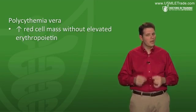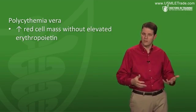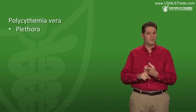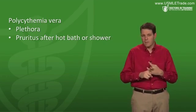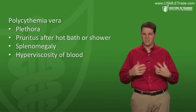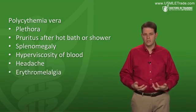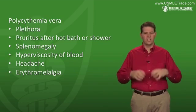Polycythemia vera involves a JAK2 mutation in a red cell precursor, causing out-of-control red cell production. It is characterized by an increased red cell mass without elevated erythropoietin, which is unusual. Polycythemia vera is associated with plethora — a reddening of the face — pruritus or itching after a hot bath, splenomegaly, and hyperviscosity of the blood. Patients can have headache due to blood sludging, and a rare symptom called erythromyalgia, where hands or feet become red, swollen, and painful due to sludging and clotting in the extremities.